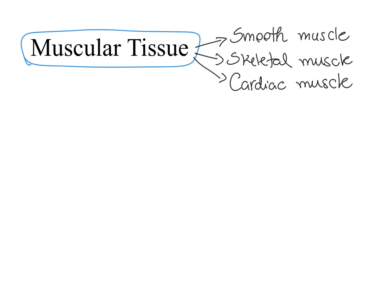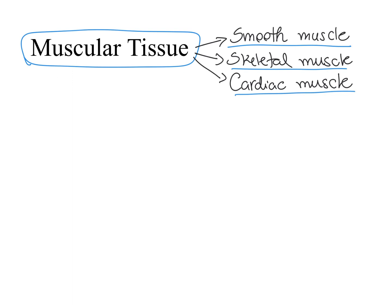But besides these differences, they are all within the muscular tissue category. With that in mind, you can expect that they have common properties. There are four special properties that we find in the muscular tissue — in smooth muscle, skeletal muscle, and cardiac muscle. And these properties are excitability, contractility, extensibility, and elasticity.